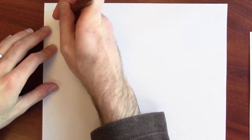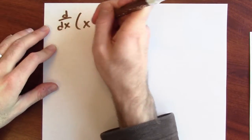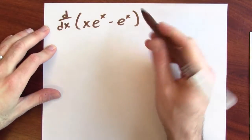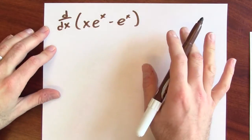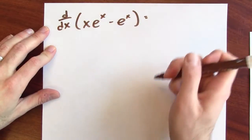So, if I differentiate xe to the x minus e to the x, I don't need to add the plus c, because if I differentiate a constant, I just get zero.